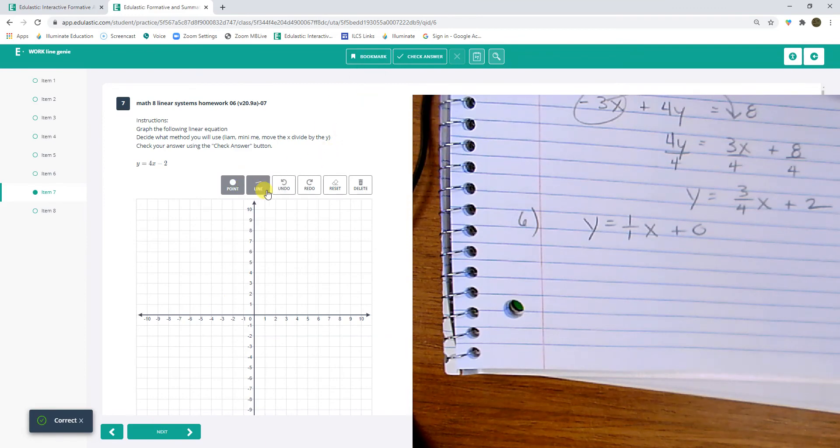A little slope-intercept action here. Start at negative 2. Up 4 over 1. 1, 2, 3, 4 over 1. Good.